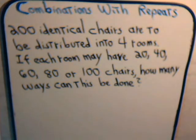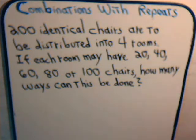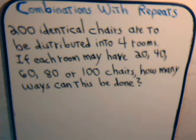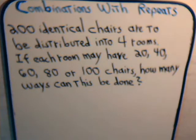This video is example number seven of how we are solving different types of combination problems that involve repeats, using ordinary generating functions to solve them. The problem is this: we have 200 identical chairs and they are to be distributed in four rooms. If each room can receive either 20, 40, 60, 80, or 100 chairs, how many different ways can we distribute these 200 chairs amongst the four rooms?